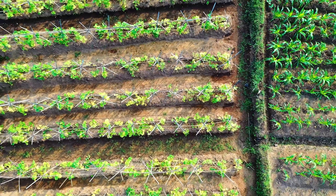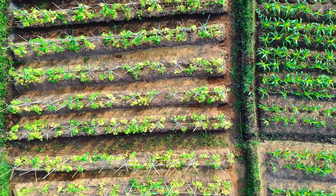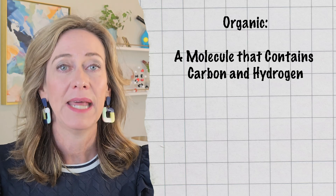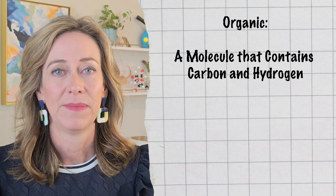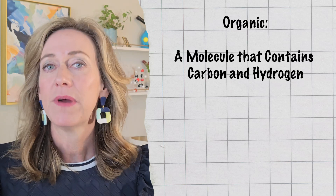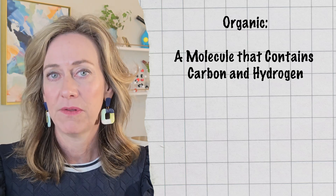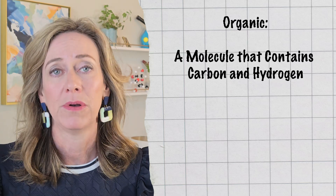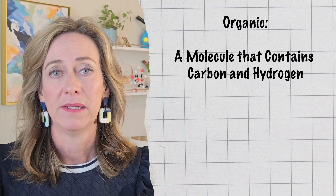When we say organic in biology, we don't mean farm-to-table fresh food. Organic means something that contains carbon and hydrogen. As we progress through the next several lessons, you'll learn how important carbon is to life.